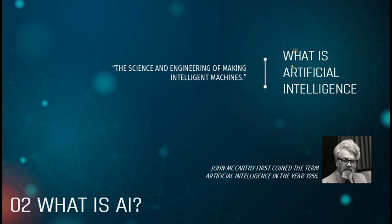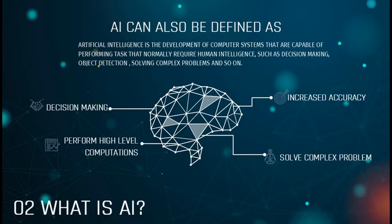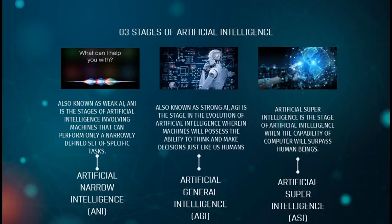Next, let's move on to understand what exactly AI is. The term AI was coined by John McCarthy, who defined AI as the science and engineering of making intelligent machines. In other words, AI can also be defined as the development of computer systems capable of performing tasks that normally require human intelligence, such as decision making, object detection, and solving complex problems.